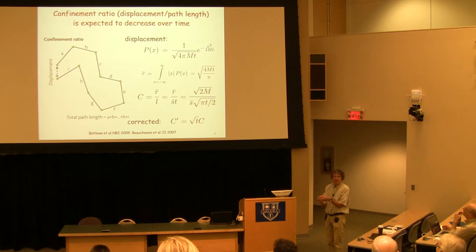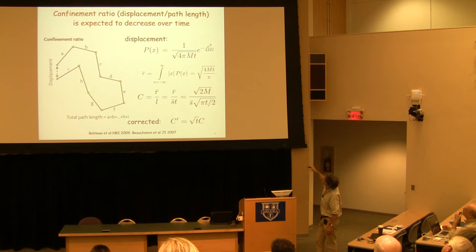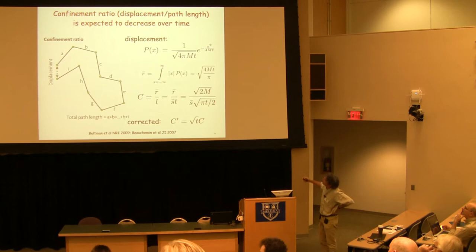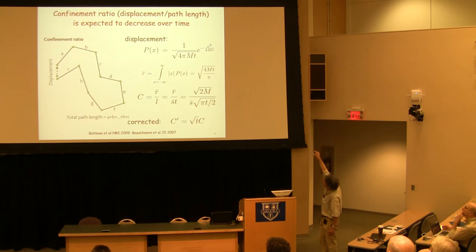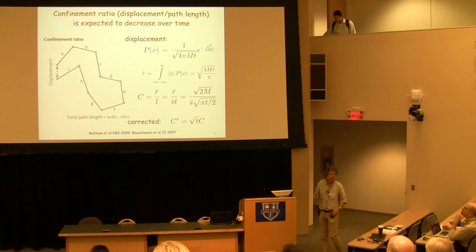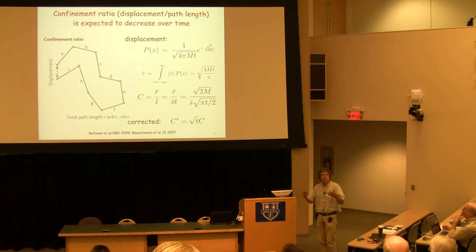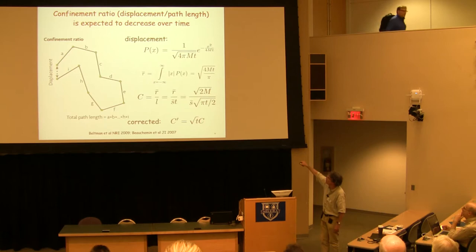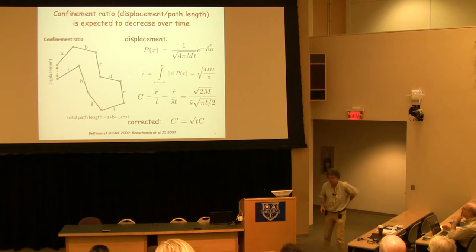There is a measure called the confinement ratio, defined as displacement divided by path length. A cell that ultimately makes a small displacement over a very long path length could be said to be confined. But if you do the math, solving the diffusion equation and computing displacement divided by path length (which is speed times time), this measure still contains the square root of time — meaning the longer your tracks or analysis, the more evidence you find for confinement. Several papers claim confinement using this measure, so we should all doubt that. At least correct your confinement measure by removing the square root of time to make it independent of time.